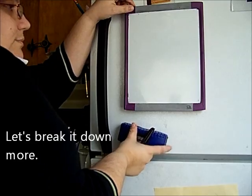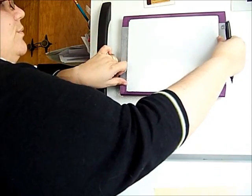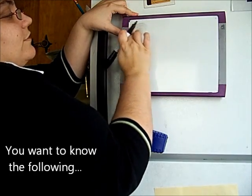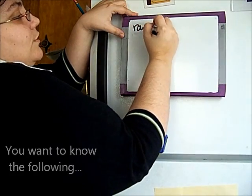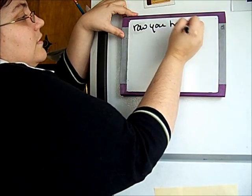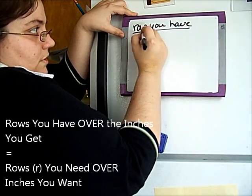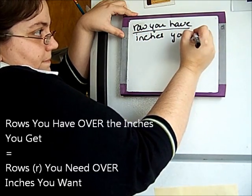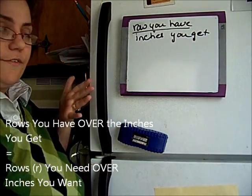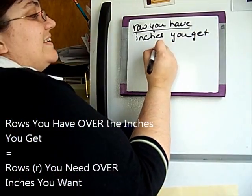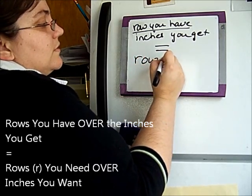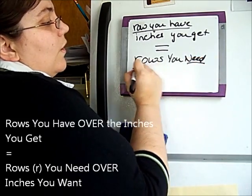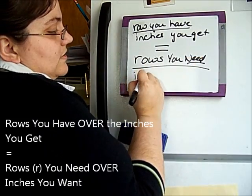You basically want it to look like this, and I'm going to turn my board. We want to know rows you have over the inches you get, or centimeters or whatever your metric system is, and you want that to equal the rows you want, or the rows you need, I should say, the rows you need over the inches you want.